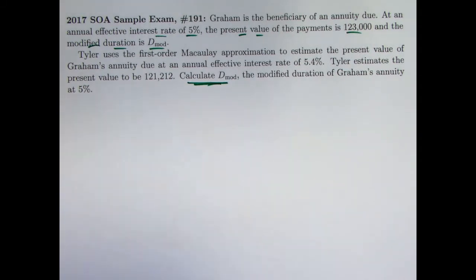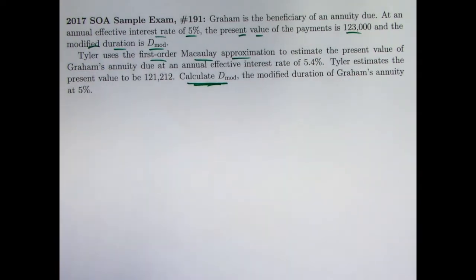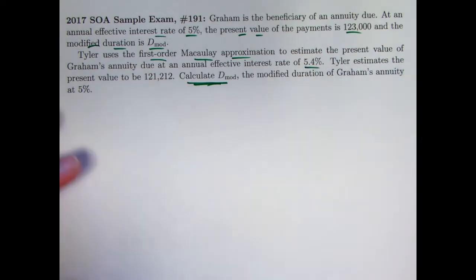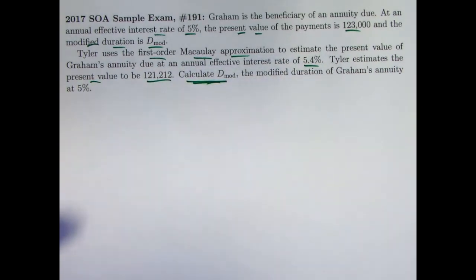Tyler, someone else, uses the first-order Macaulay approximation to estimate the present value of Graham's annuity due at a different effective interest rate of 5.4%. Tyler estimates with that approximation the present value to be $121,212.